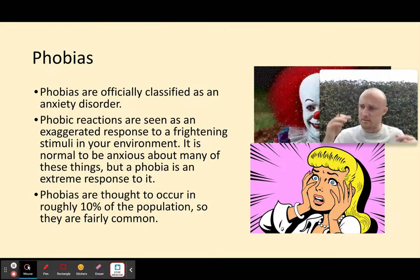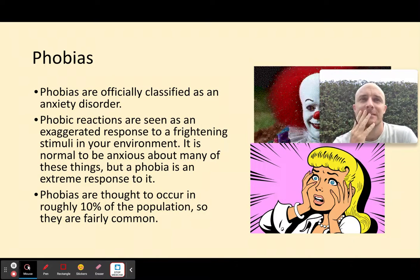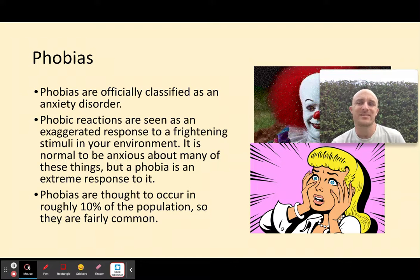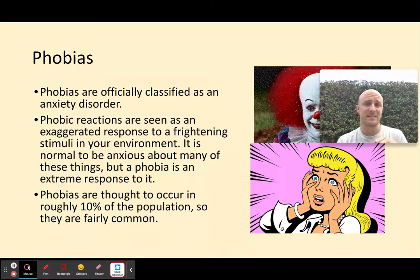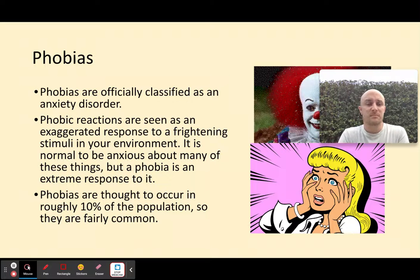Characteristics of disorders. Weird bullet point this, to be honest. Not going to get a 16 marker on this. Probably mostly going to get a 4 marker. You just need to know the behavioural, emotional and cognitive characteristics for phobias, depression and OCD. I'm going to be going through the very basic ones. There are a lot more that you can use, but I'm going to be going through the basic ones in this bullet point.